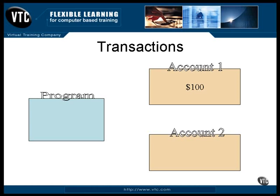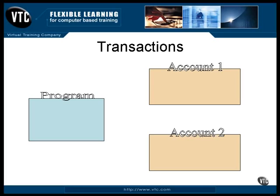This is the classic example of a simple transfer of money from one account to another. It consists of two discrete operations, and no matter how you do them, there is a moment of vulnerability. For example, say you take the money out of account one, and your next step is to put it into account two. But the system crashes instead. The money isn't there anymore — it's just gone. You can bring the system back up, but the money just isn't anywhere.